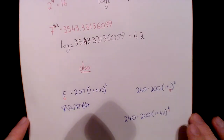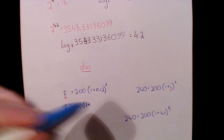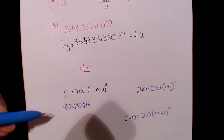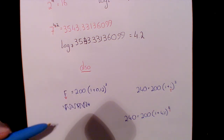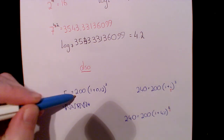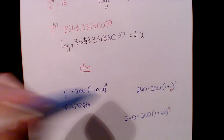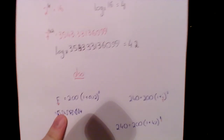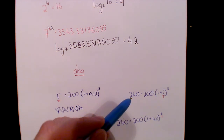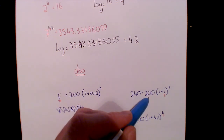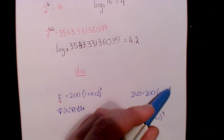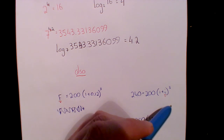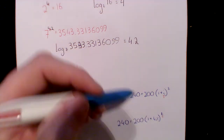Let's bring this back to third year. Hopefully you remember compound interest: the final amount equals the principal multiplied by (1 + interest) to the power of time. If I have 200 euros invested for 3 years at 12%, I can type that in and get the final amount — no problem. Alternatively, if given the final amount, principal, and time, I can use algebra to find the interest rate.